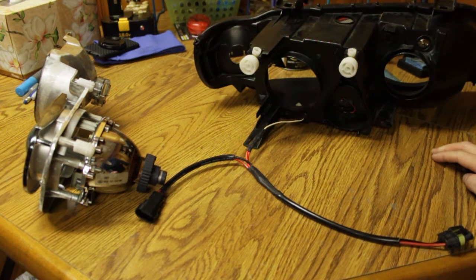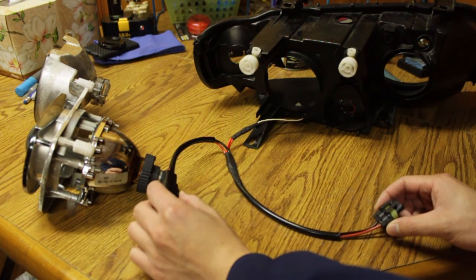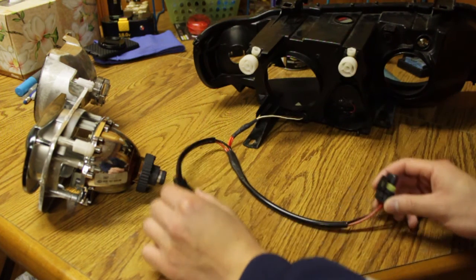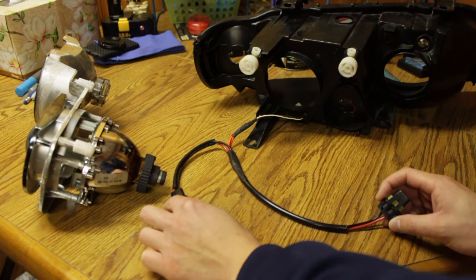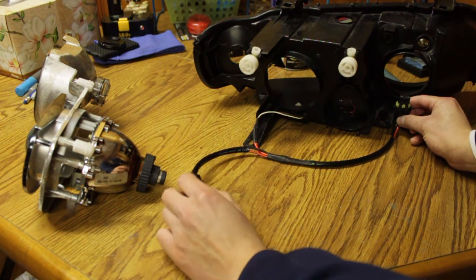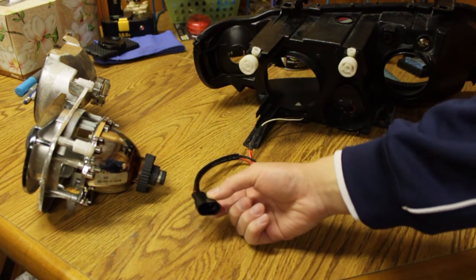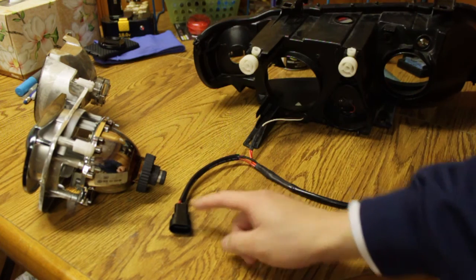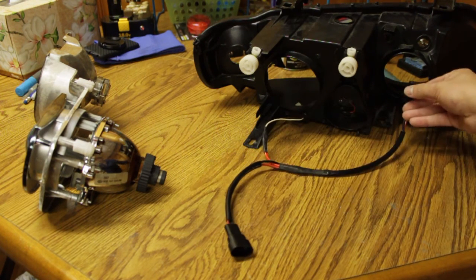Since I didn't want to hack into the OEM wiring for the X5, I bought a 9006 extension, which is just a male and female extension, and spliced the high beam solenoid wires into that. So this male side would plug into the high beam bulb, and then this female side would plug into the original high beam plug. So when that happens, power will go straight to the bi-xenon solenoid and also the high beam bulb.